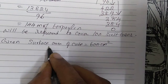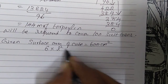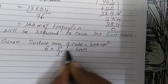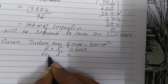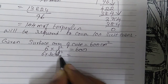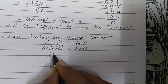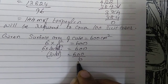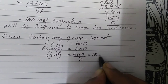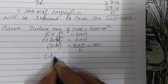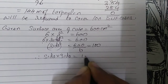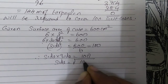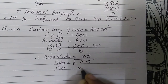The formula for surface area of a cube is 6L². So 6 × L² = 600. Therefore L² = 600 ÷ 6 = 100. Since L² = 100, taking the square root gives L = 10 cm.